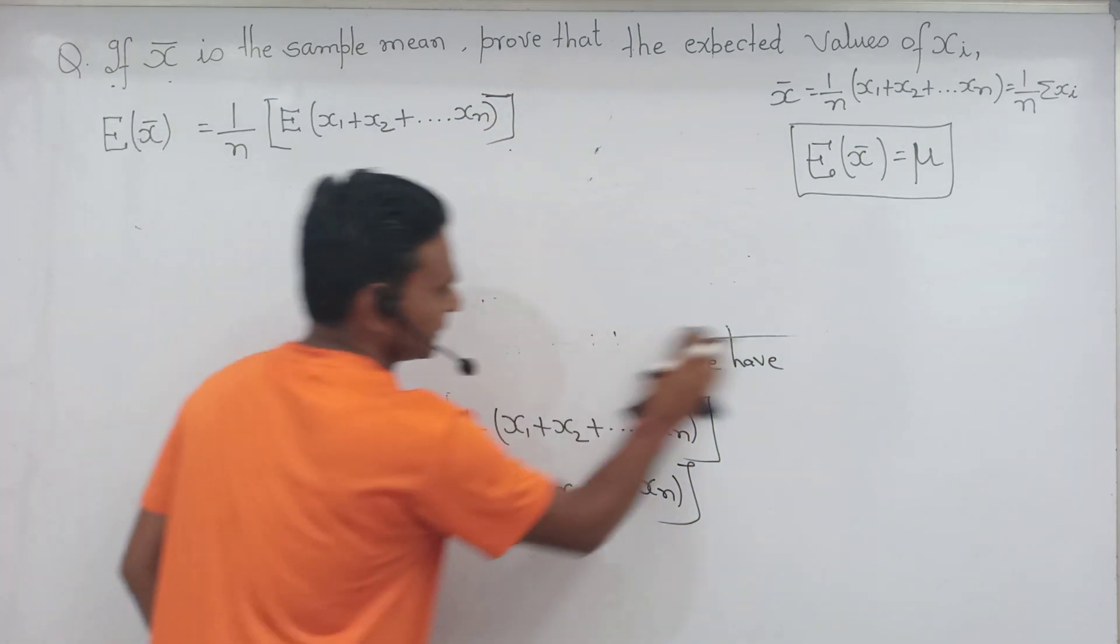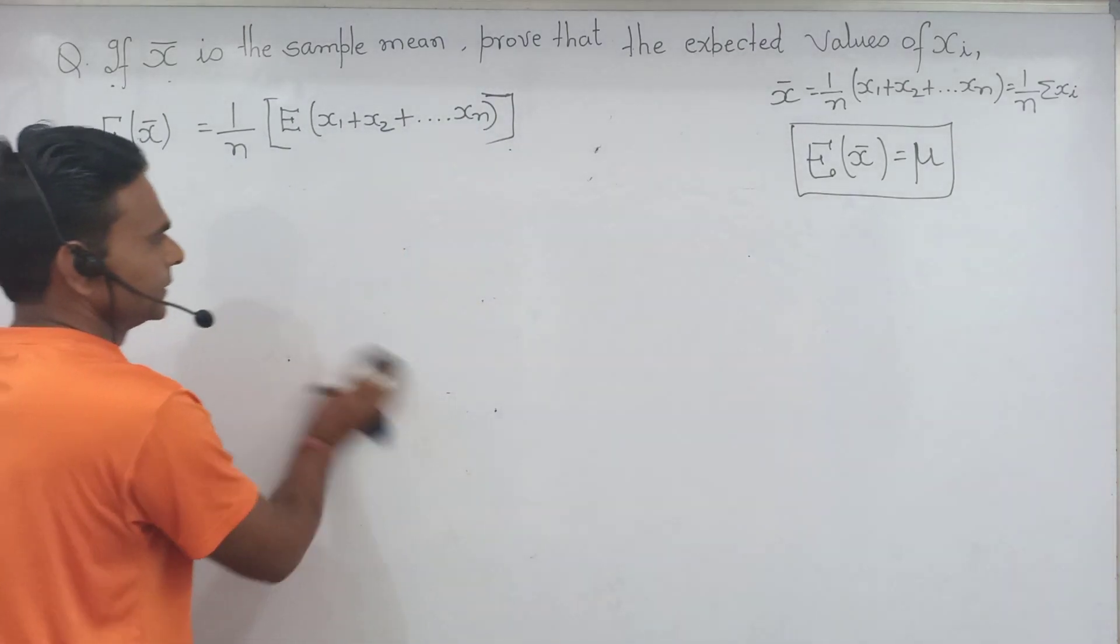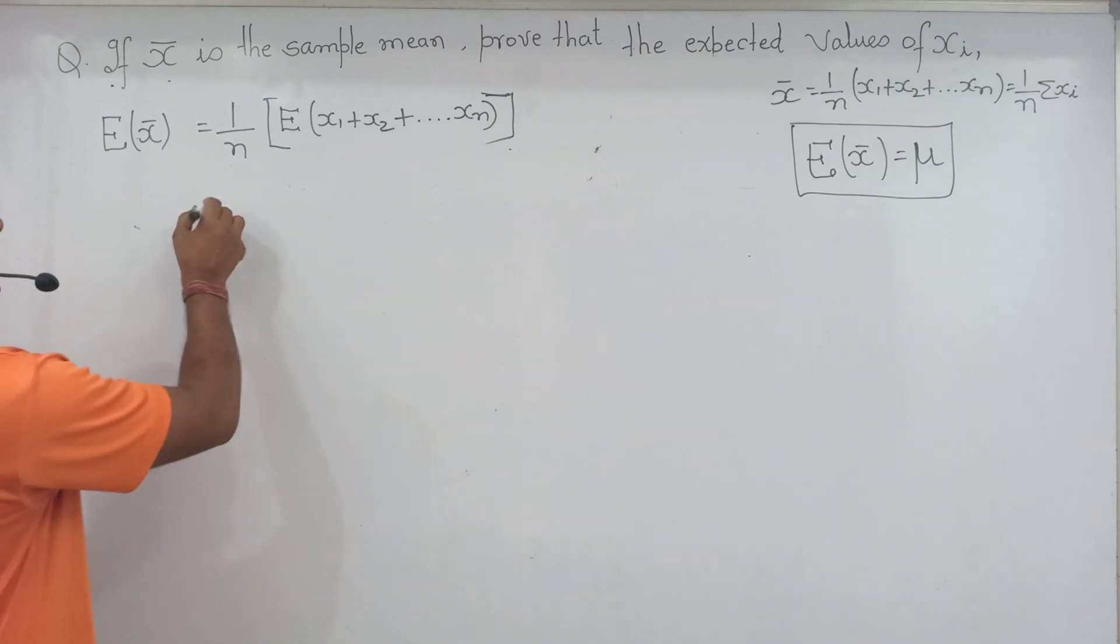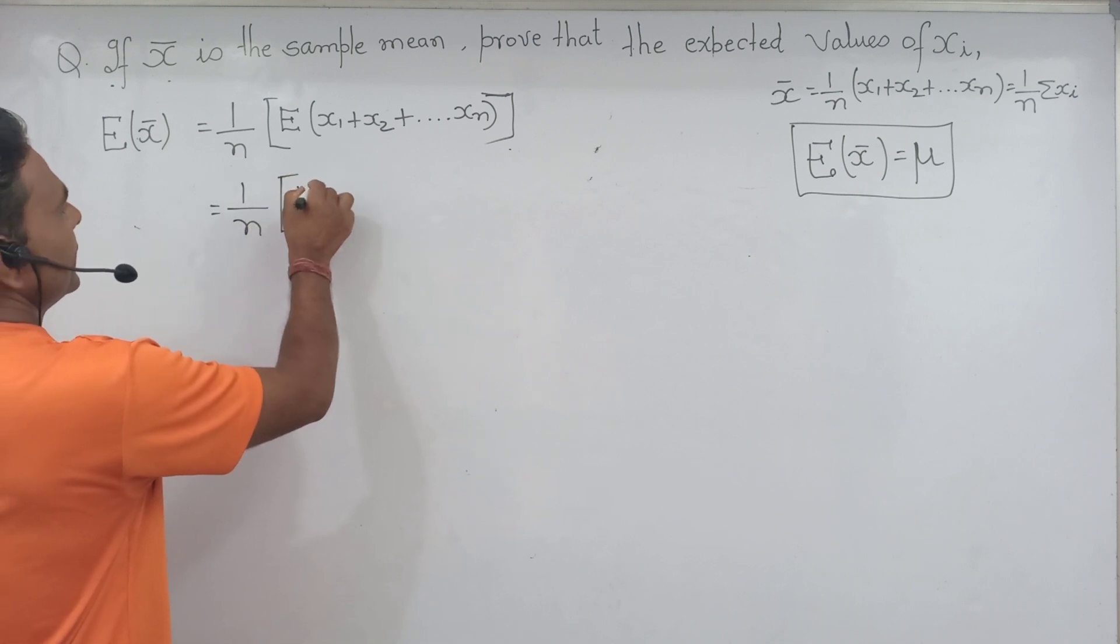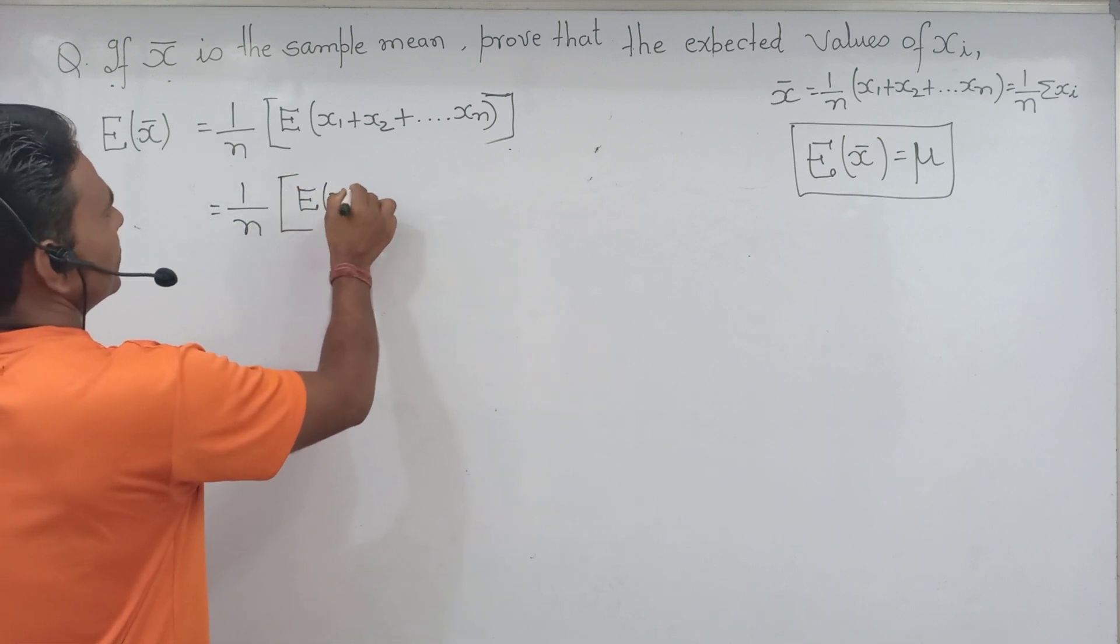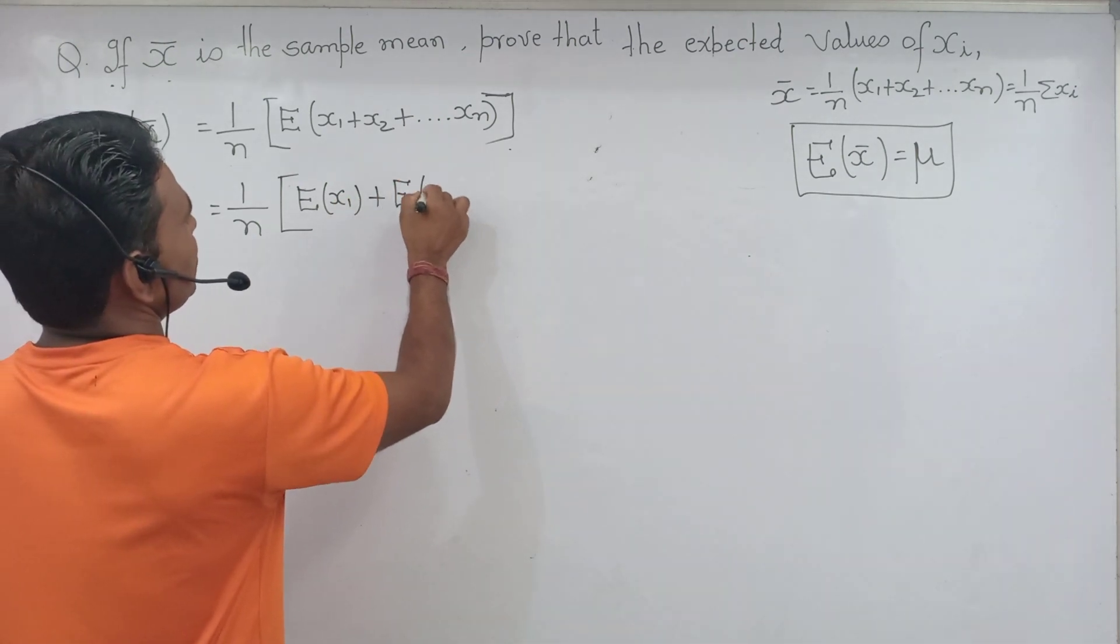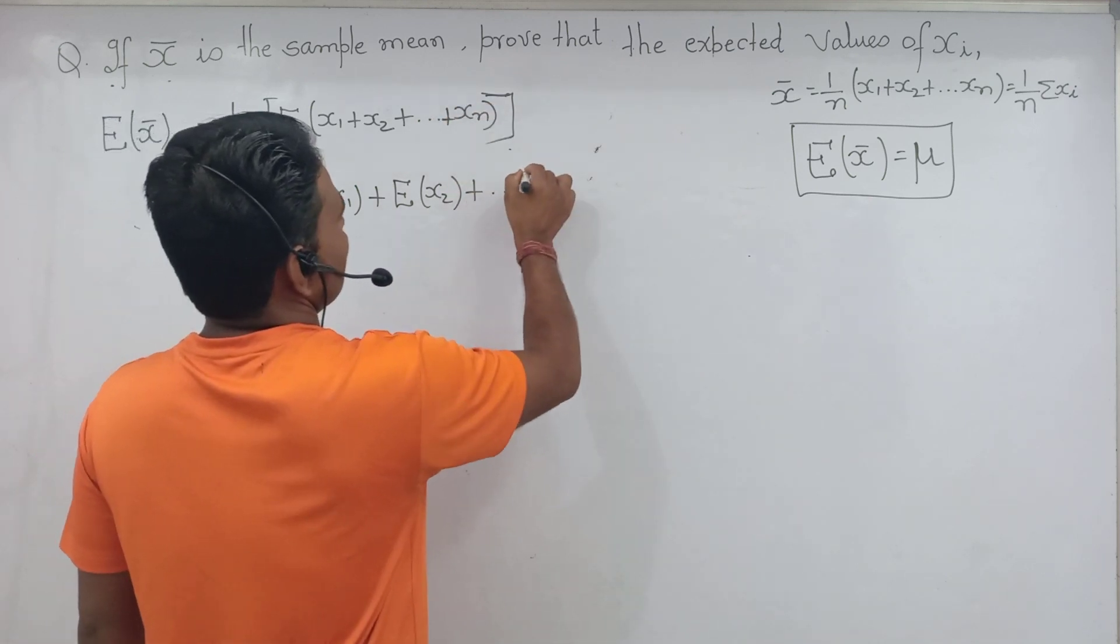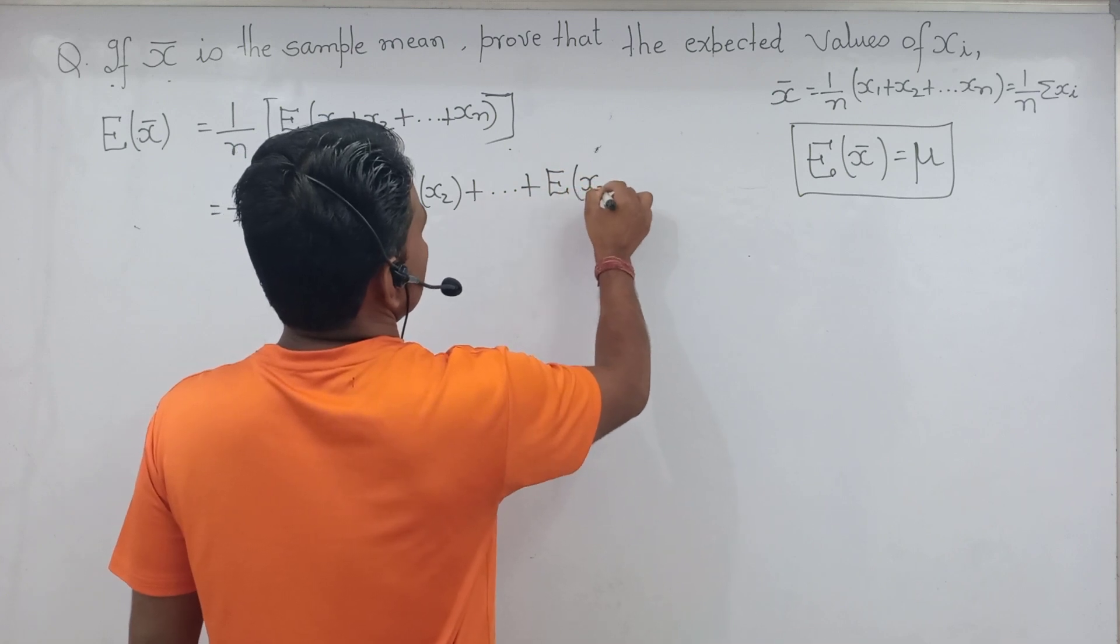And expected mean equal to 1 by n bracket expectation of X_1 plus X_2 plus dot dot dot X_n. Okay, now we can see this line.